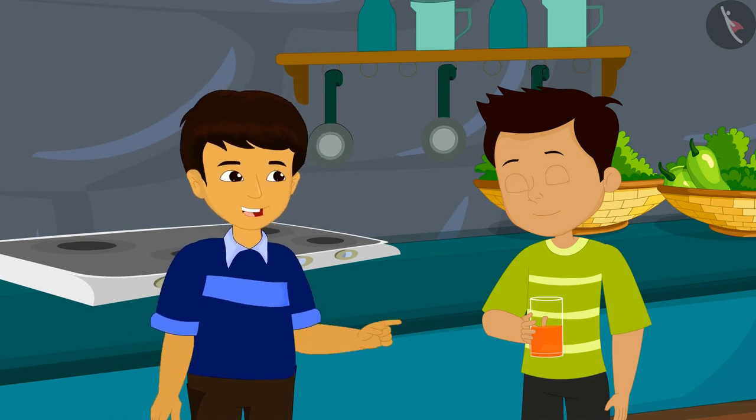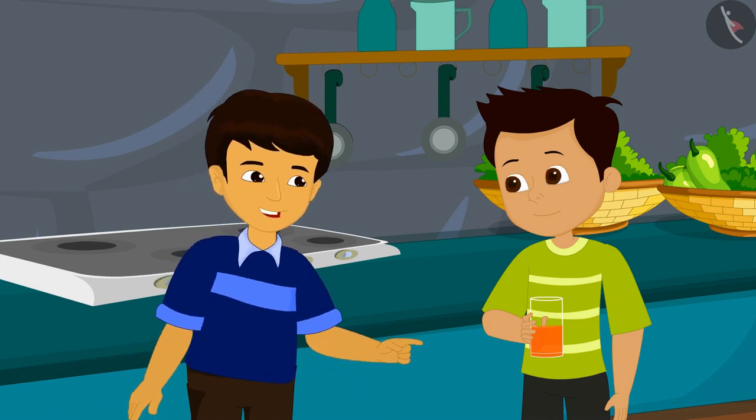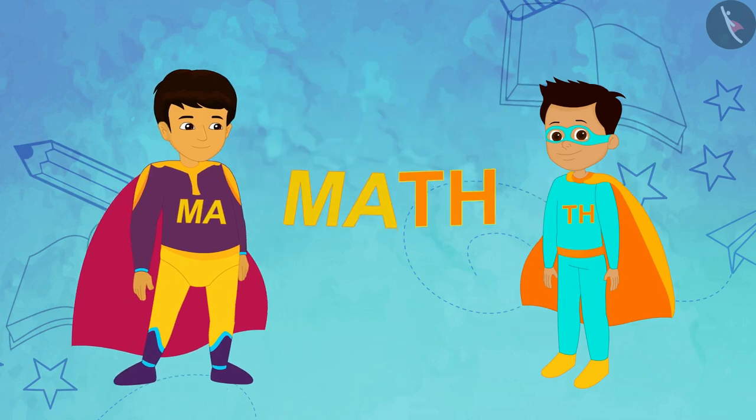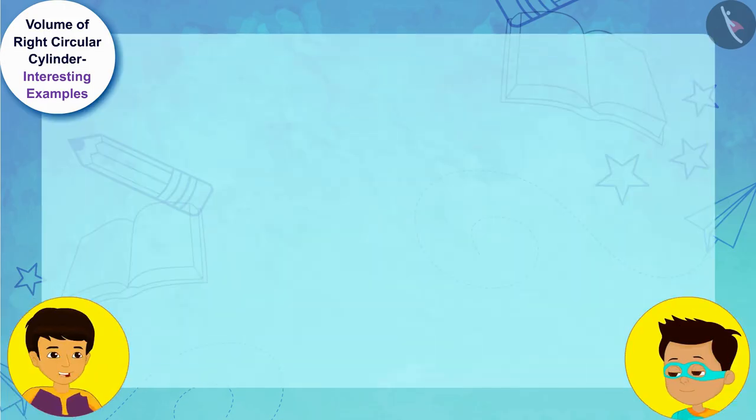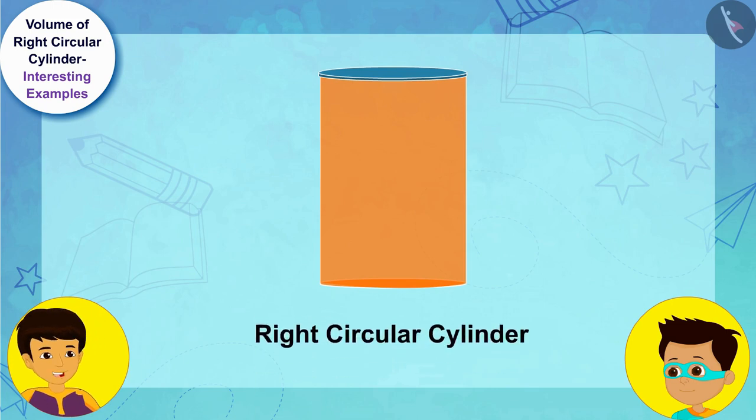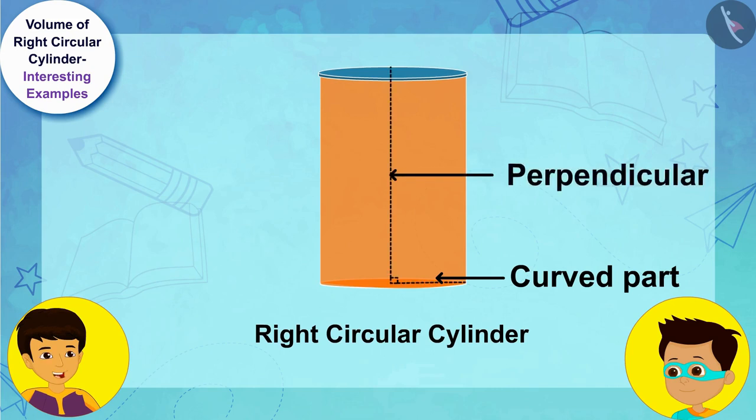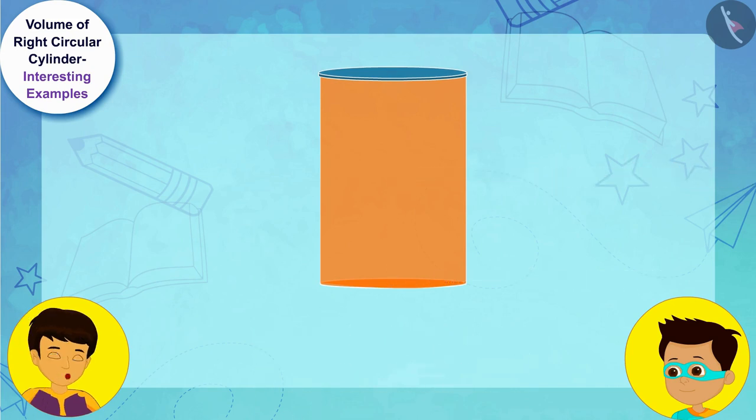But we can definitely find the answer through mathematics. That means it's math time! Look Thomas, this vessel is a right circular cylinder because its curved part is perpendicular to its base.